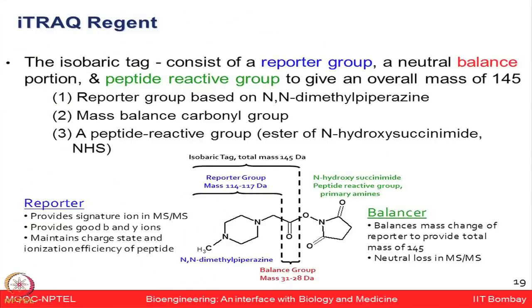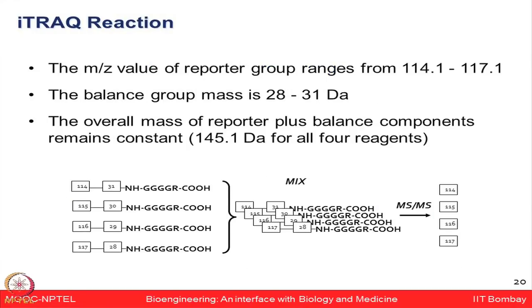In the iTRAQ 4-plex reaction, conditions A, B, C, and D are compared. The iTRAQ reagent has reporter ions at 114, 115, 116, and 117 m/z, balanced by balance regions of 31, 30, 29, and 28, so that together they always add a mass of 145 — isobaric for all four conditions. After labeling, peptides from all four conditions are mixed and analyzed in the mass spec. MS and MS/MS analysis reveals these reporter ions at the MS/MS level, enabling both protein identification and quantification across the four conditions.